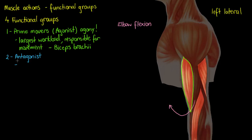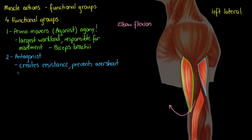The second functional group is called an antagonist. The antagonist creates resistance against the prime mover and prevents overshoot — it opposes the desired movement and often becomes stretched out, which helps the muscles spring back to their resting position after contraction. When contracting our bicep, it's going to be our triceps that provide resistance. An antagonist will almost always be on the opposite side of the joint from the prime mover. Our triceps, outlined in blue, are antagonizing our elbow flexion and opposing the bicep.